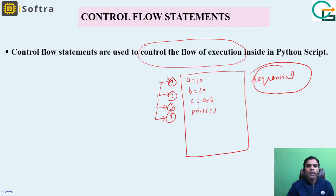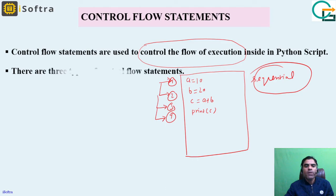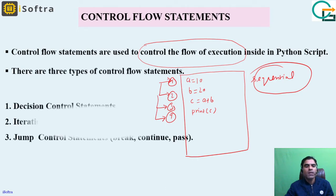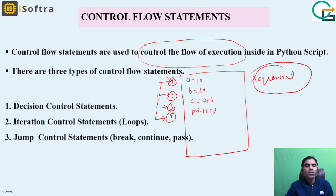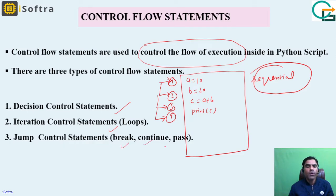In Python we have three types of control flow statements. First is decision control statements, second is iteration control statements — loops come in this category — and finally jump control statements, in which we discuss break, continue, and pass.